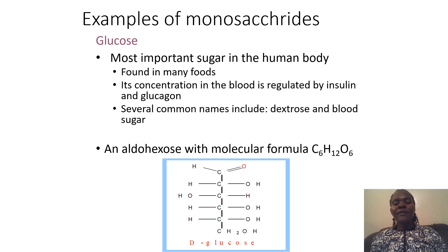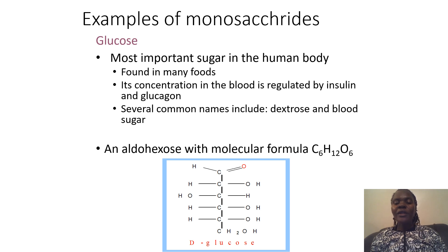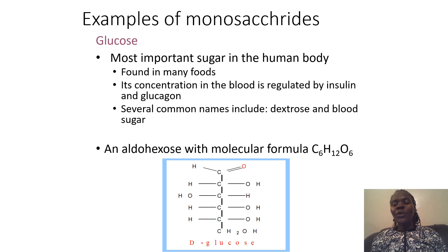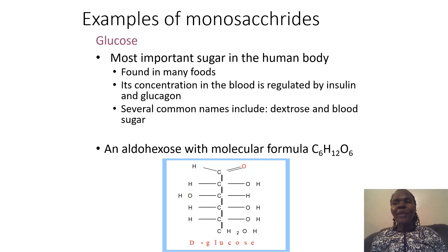Examples of the monosaccharides include glucose, which is an important sugar in the human body, found in many foods. Glucose is used in blood regulation by the two hormones insulin and glucagon. Its common name is also known as dextrose or blood sugar. Based on monosaccharide naming, glucose is an aldo hexose — a six-carbon sugar — with the molecular formula C6H12O6. At carbon atom number one, there is an aldehyde group.